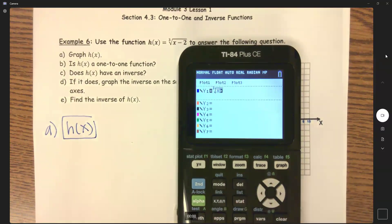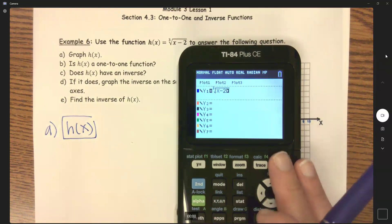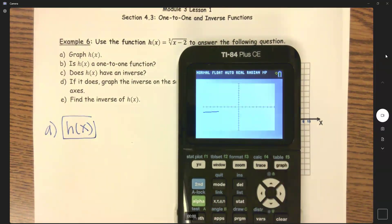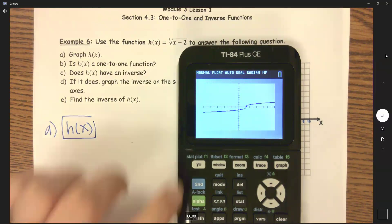And so we have x minus two. And then I will hit graph. So there's my graph. So we know what it should look like.